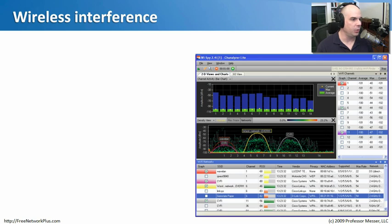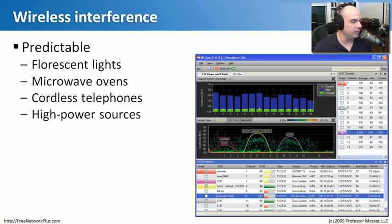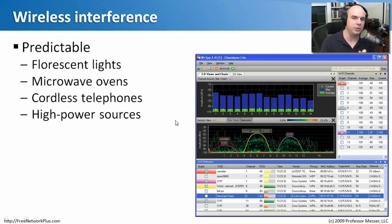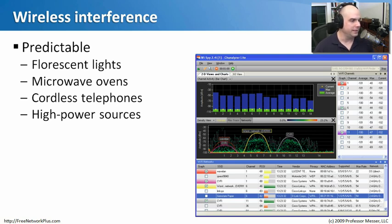Let's start our conversation with wireless interference. This is a very common problem, where something outside the scope of our wireless network is causing a problem for us. Wireless interference can be occasionally very predictable. If we turn on a microwave oven, you may find a lot of interference. If somebody has a cordless telephone running at 2.4 GHz, that's the same frequency that wireless networks might use. Or if there's a high power source somewhere, you'll see that represented.